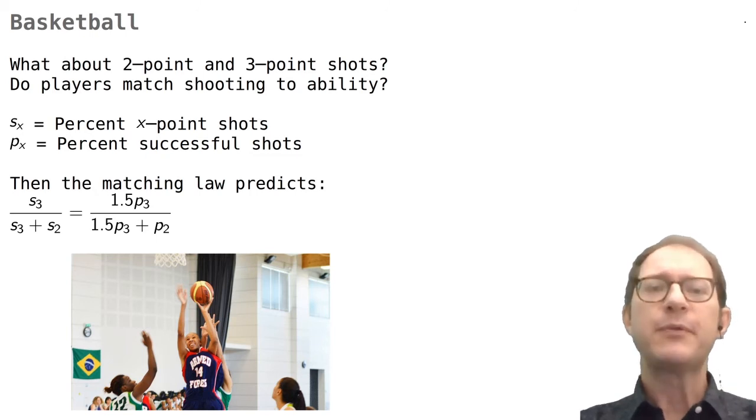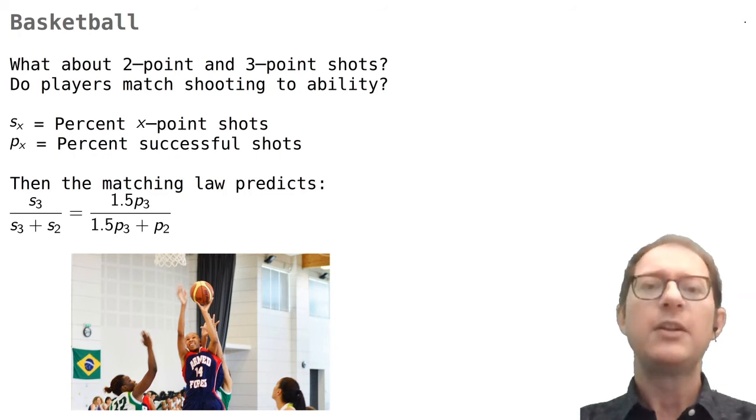For example, Vollmer and Bourret looked at how basketball players decide between two and three point shots. According to the matching law, players should match the number of two and three point shots they attempt to how many points they make for each kind of shot. Note that a three point shot is worth one and a half times a two point shot if successful, so the number of successful three point shots multiplied by 1.5 is the matching equation to calculate how much reward a player gets from three point shots.